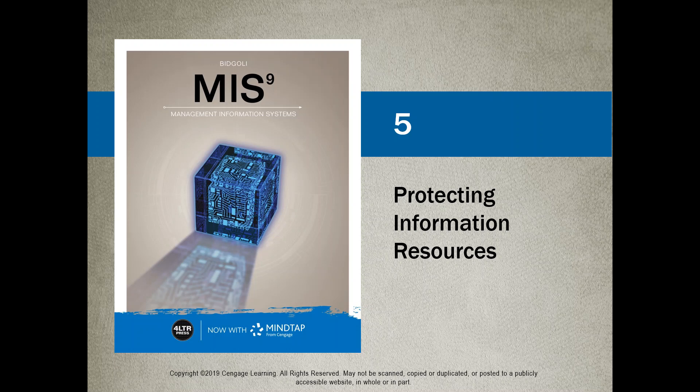Like chapter four, we're talking about privacy and ethical issues. In chapter five, we're going to be looking at how to protect information and where information can be breached. As a user of a Managing Information System, it's very important for everyone to understand the basic security threats, because you will be in charge of a certain amount of data and access to that system, and therefore you have a certain amount of responsibilities.